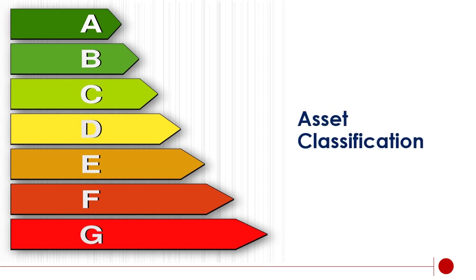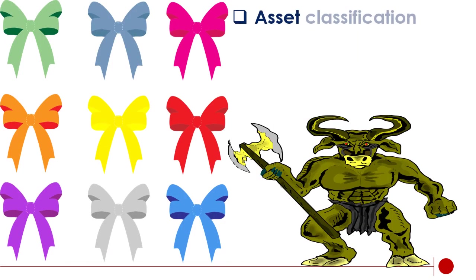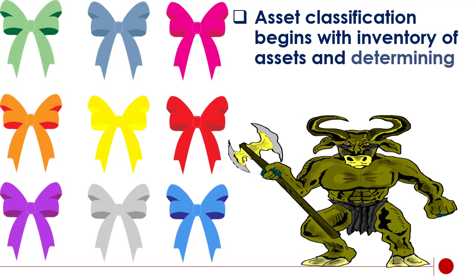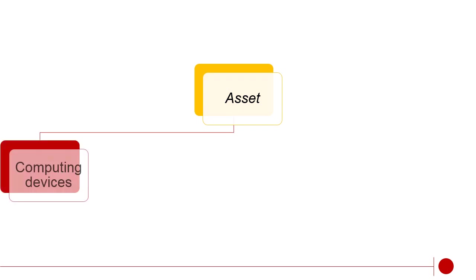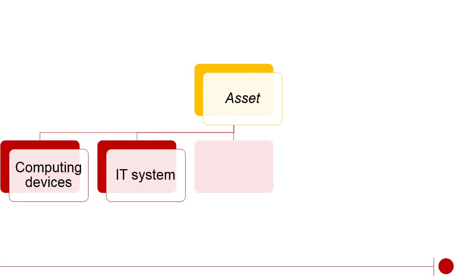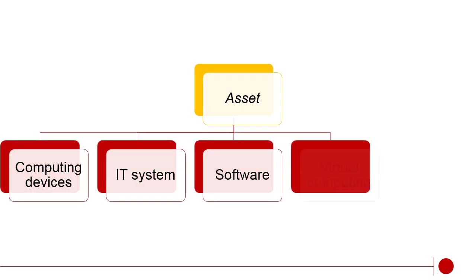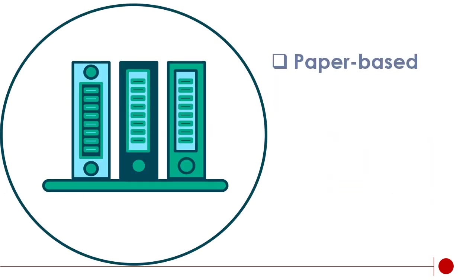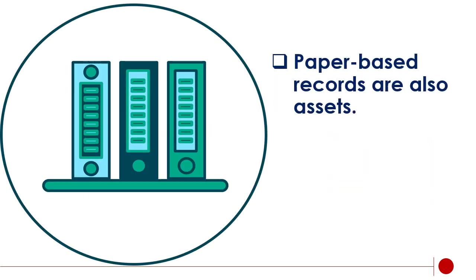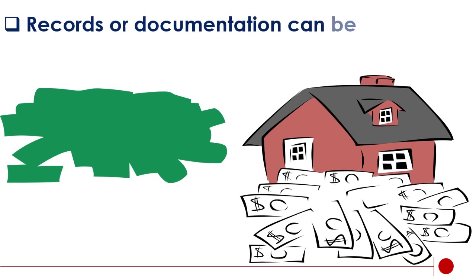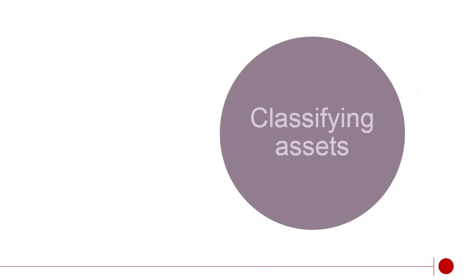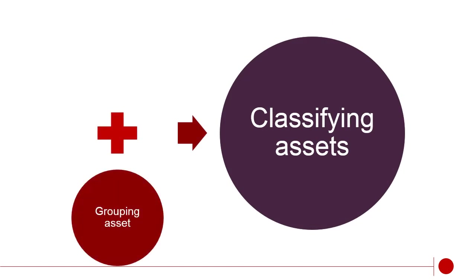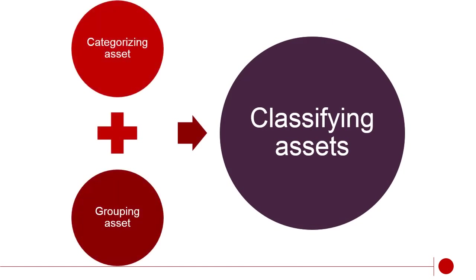Asset classification begins with an inventory of assets and determining the responsible persons or owners. Assets include computing devices, IT systems, software, virtual computing, and hardware. Paper-based records are also assets. Records or documentation can be classified based on sensitivity and value. Classifying assets means categorizing and grouping them by level of sensitivity.